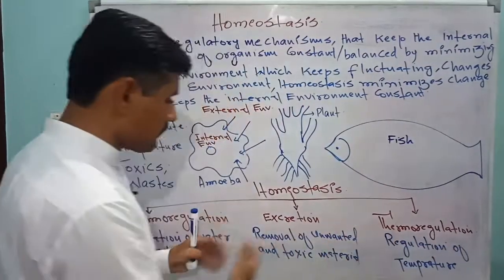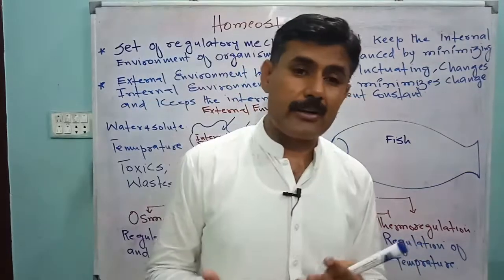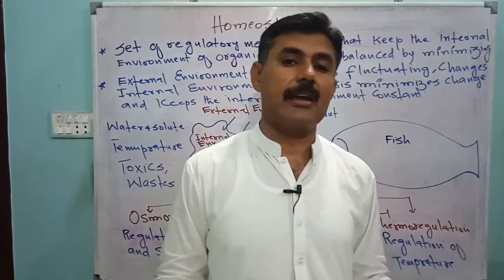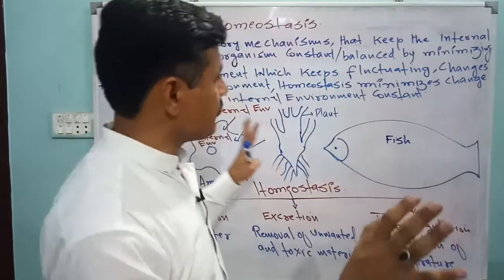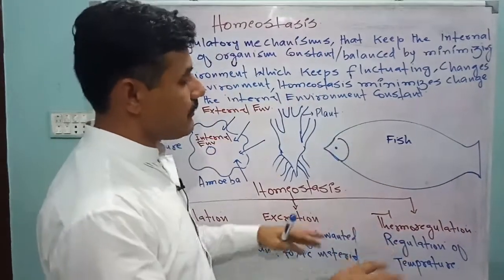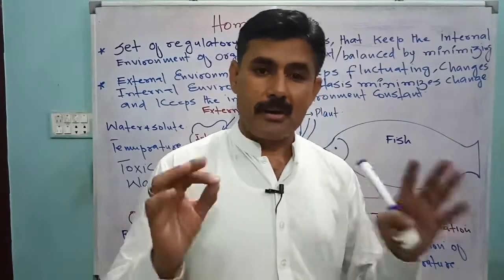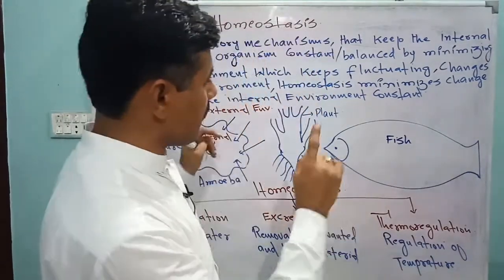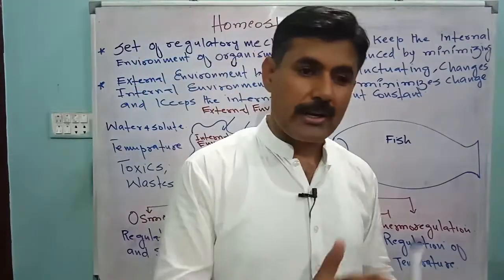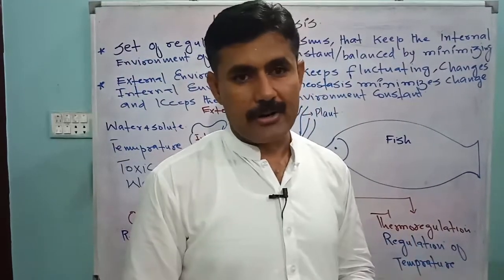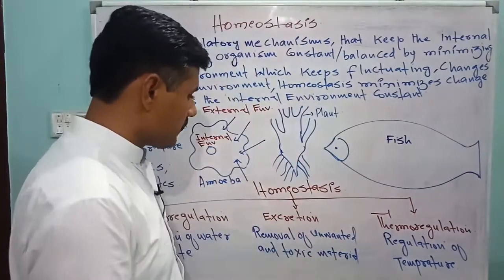So these are the different aspects of homeostasis that allow organisms to maintain their internal environment, so that whatever fluctuations occur in the external environment, the internal environment will always remain constant. If it can't be kept perfectly constant, at least the change would be minimized to a level that can be tolerated. We will study osmoregulation in more detail in the next class.